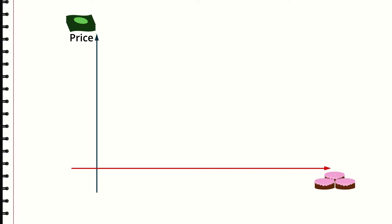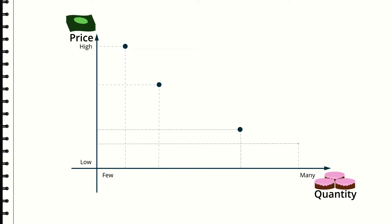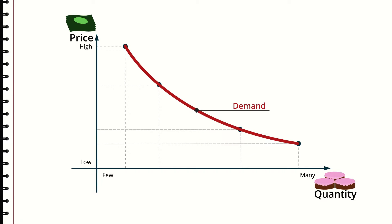To study this relationship Maria draws a diagram. On the y-axis she writes price and on the x-axis how many cakes she's selling — the quantity. When she marks in the observations she made they form a fairly smooth line sloping downward. This line describes a relationship between price and quantity. This relationship is the demand for cakes.